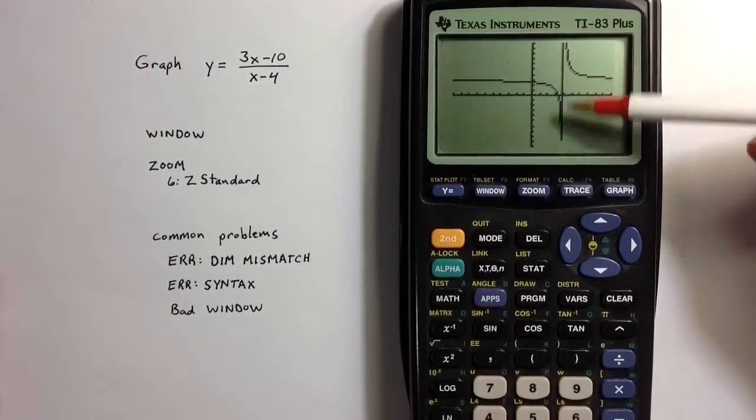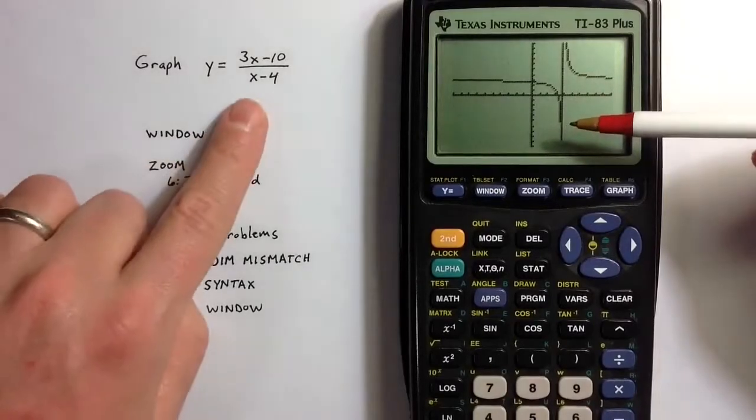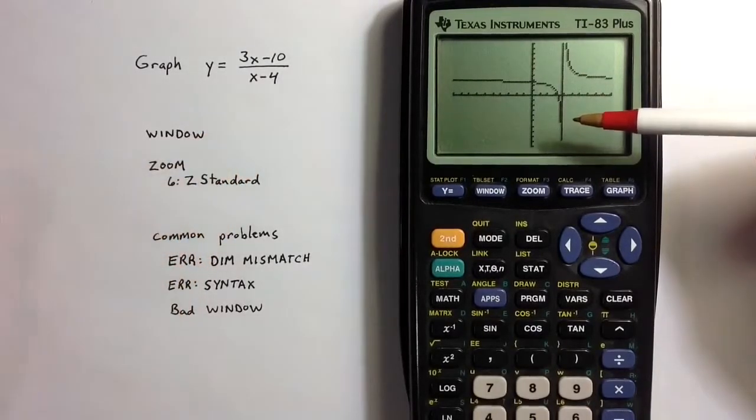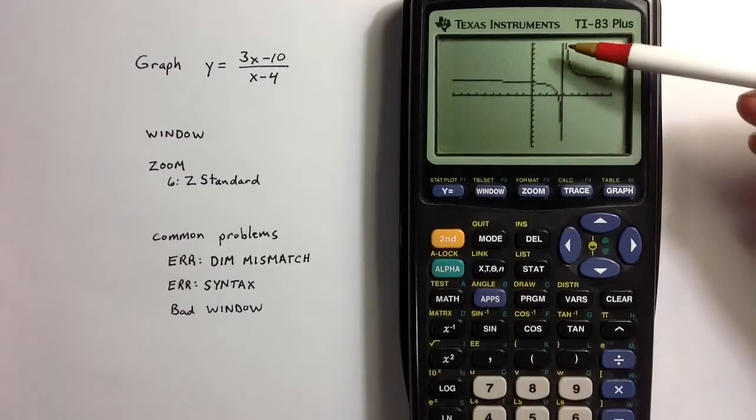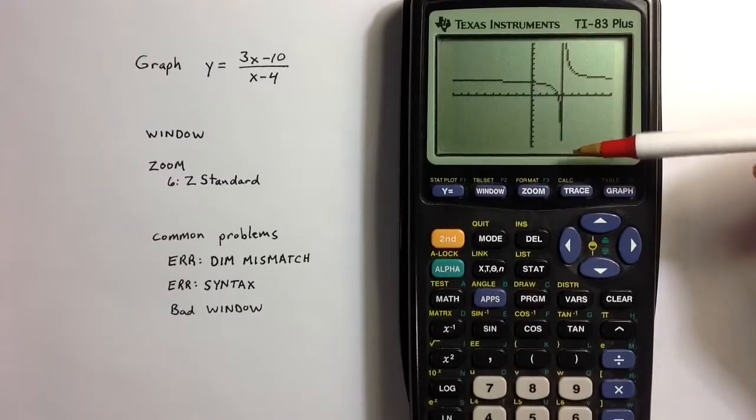And because the function is undefined at 4, we get a problem here with this graph. It connects the dots in a way that it shouldn't.